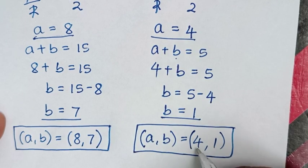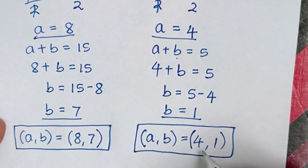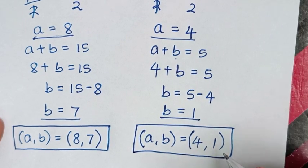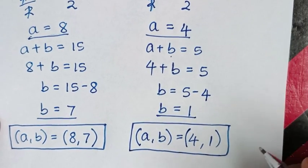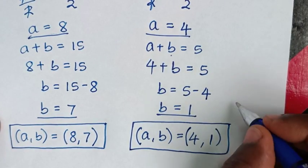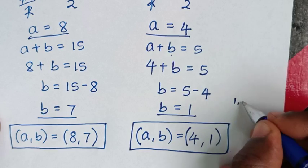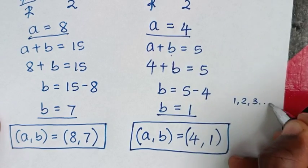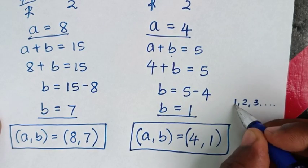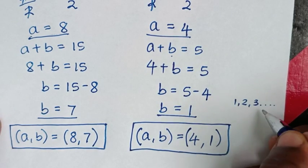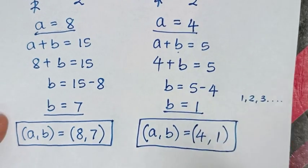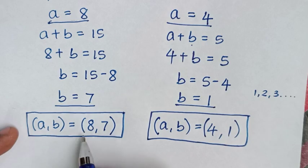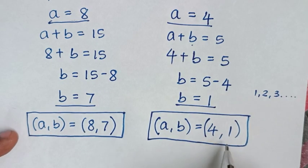Both solutions are valid because a and b are elements of natural numbers, which are 1, 2, 3, and so on. Both 4, 1 and 8, 7 belong to the natural numbers.